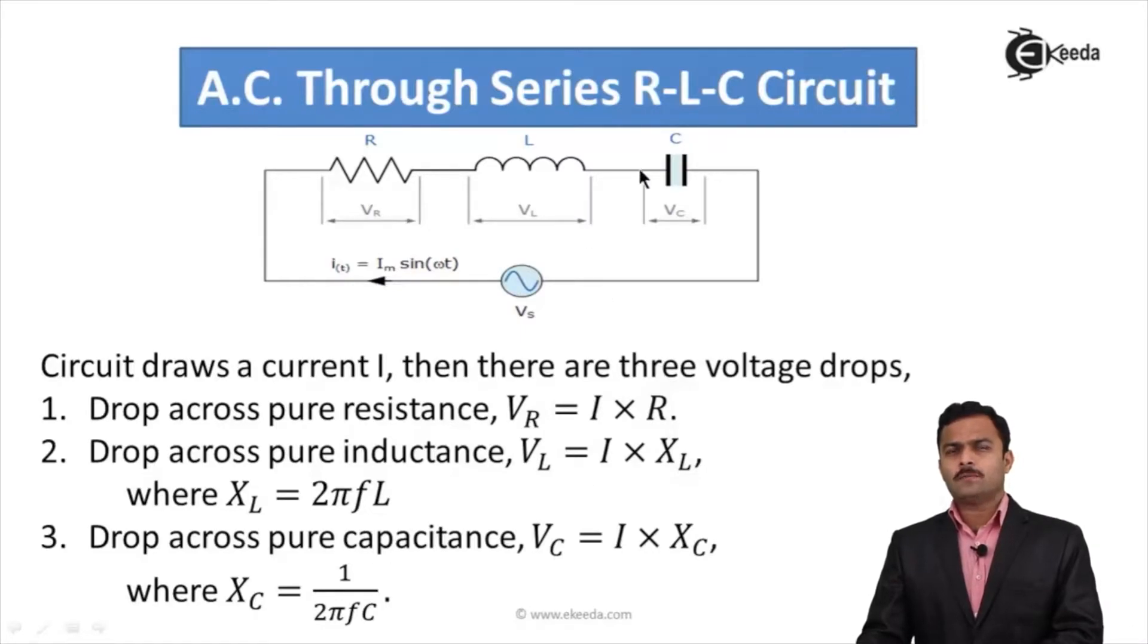One more drop is across pure capacitance given by Vc equal to I into xc. Again xc is capacitive reactance given by 1 upon 2 pi fc.